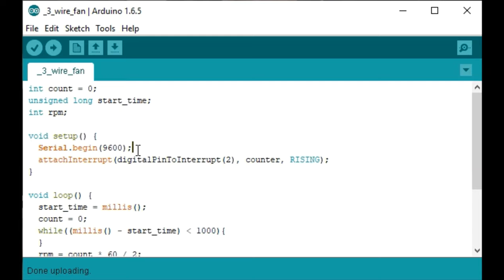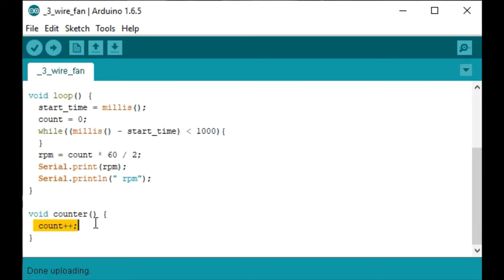In our setup loop, we'll start the serial monitor, and we will declare Arduino pin 2 as our interrupt pin, and when we detect a rising edge, it will trigger the subroutine called counter. The subroutine counter will simply increment the count. In our loop, we'll initialize the start time to the current time, and we'll reset our count integer to zero. And then we will wait one second. Once that one second has elapsed, we will tally up how many pulses we counted during that one second, multiply it by 60 to get per minute, and we will divide by two since there are two pulses per revolution. We'll print that to the serial monitor and see how it works.